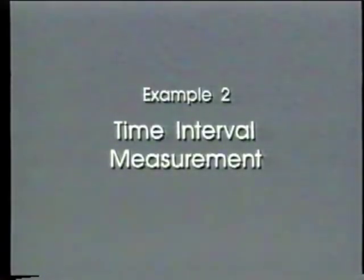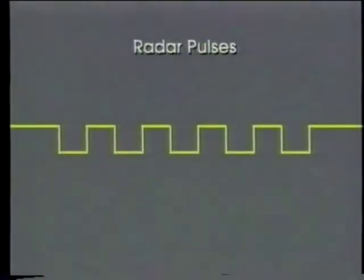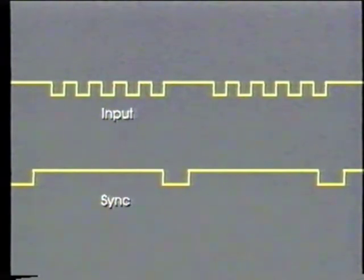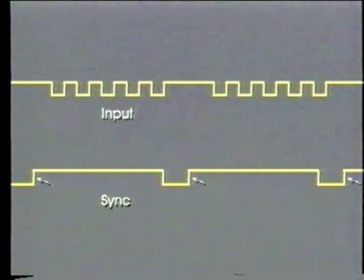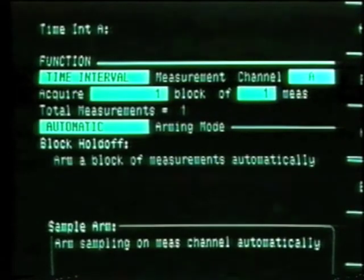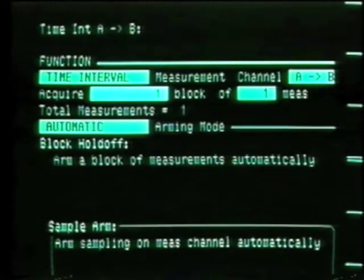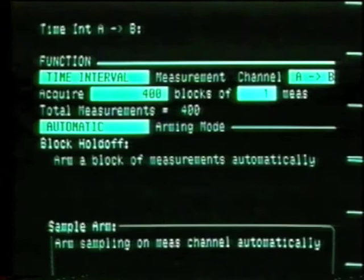Our second example is a time interval measurement. We will show how the 5371 can measure and characterize the pulse width stability on detected pulses from a radar transmitter. The signal is a stream of negative-going pulses in groups of five, with a sync signal to indicate each time the pulse stream begins. After each rising edge on the sync signal, we make five pulse width measurements. We select time interval A to B as the measurement function, then choose 400 blocks of five measurements each for a total of 2,000.